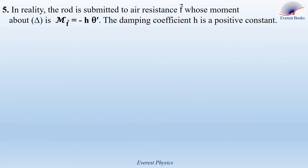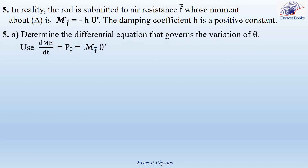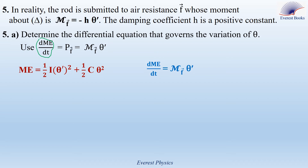Part 5: In reality, the rod is subject to a resistive force whose moment about axis delta is equal to minus H theta prime, where H is a positive damping coefficient. Part 5A: Determine the differential equation governing theta. Using dME/dt equal to the power of the friction force, which equals the moment of friction times angular velocity, we get dME/dt equal minus H theta prime times theta prime, equal minus H theta prime squared.